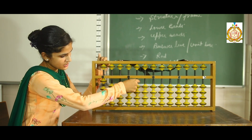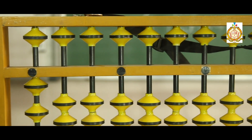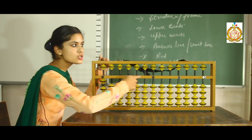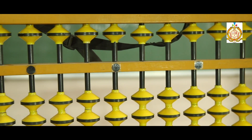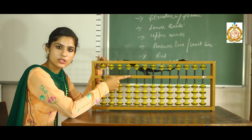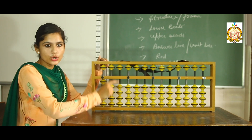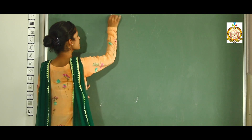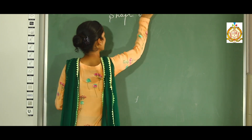The fifth part is the rod. These black stripes you are seeing here, on which the beads function, are called rods. The sixth part is unit dots. These black dots you are seeing here are called unit dots, and these dots indicate the unit place value — the ones place value.